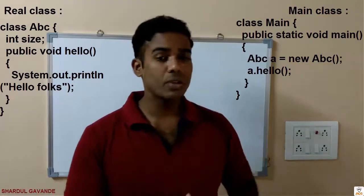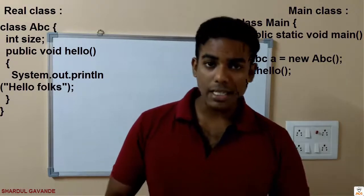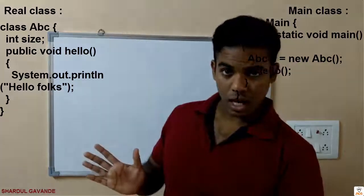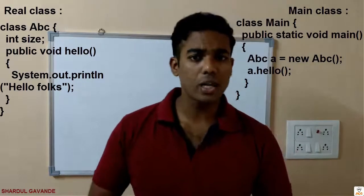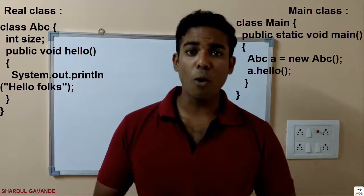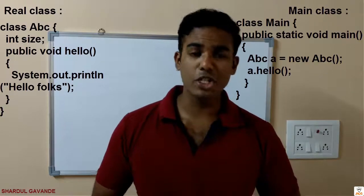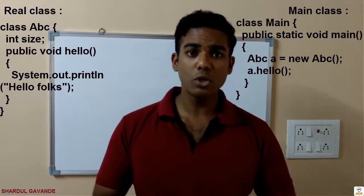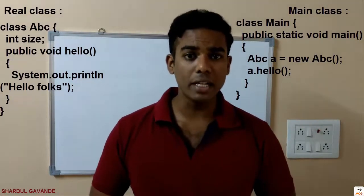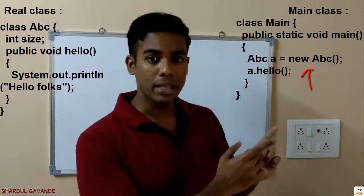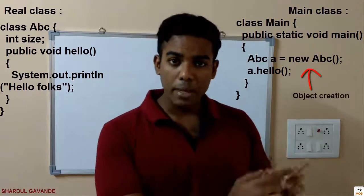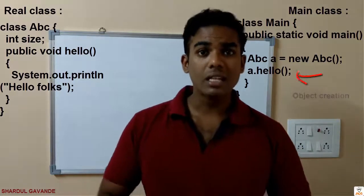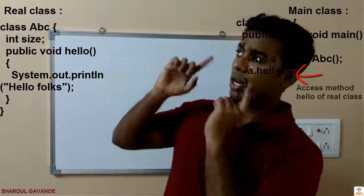So what exactly we will have in this main class is — to access the variables and methods of the real class, you need to create something called objects. Because Java, which is a purely object-oriented programming language, consists of classes and objects. So objects need to be created inside your main method. In your main method you have to create those objects and use them to access the variables and methods of your real class.